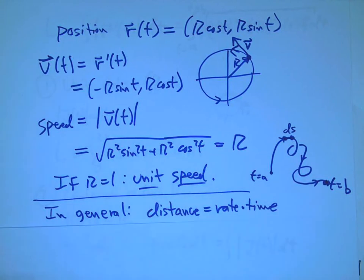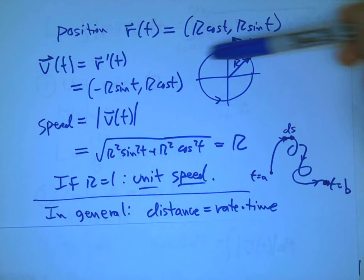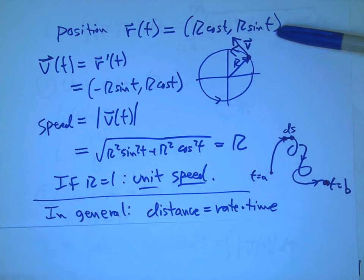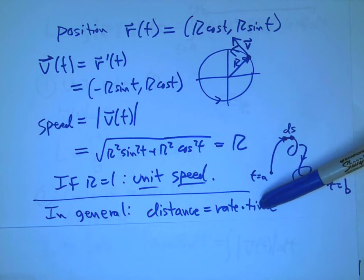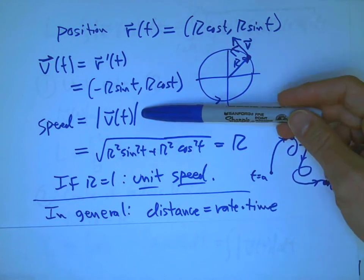Because if I have a parameterization like this, then time is my preferred variable here. That's the input to this story. And so that's going to be something I'm familiar with. And the rate is the speed, and I know how to calculate that.